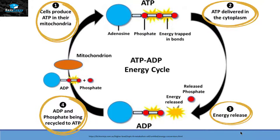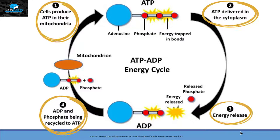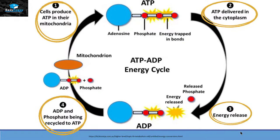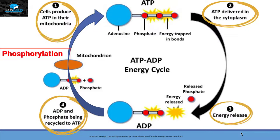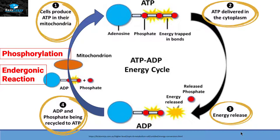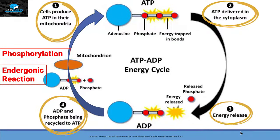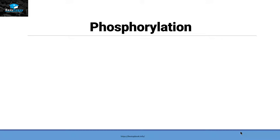Now we will discuss each side in more detail. Starting with the left-hand side, we are going to see how adenosine diphosphate and inorganic phosphate will make ATP. This type of reaction is called phosphorylation, and this is an endergonic reaction — it means that it will need energy in order to make ATP from adenosine diphosphate in heterotrophs. We have two different types of phosphorylation.